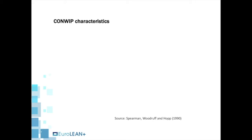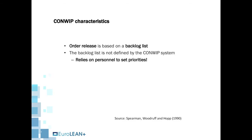CONWIP has some distinct characteristics. The order release is based on a backlog list, and the backlog list is not defined by the CONWIP system, so it relies on personnel to define the priorities. The queue discipline within the production system is first-in-system, first-served, so the order of the backlog list is very important to make sure that production meets demand.